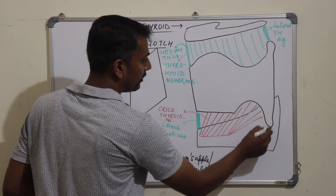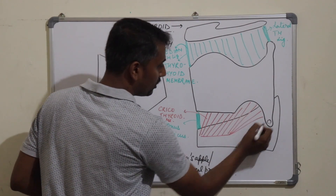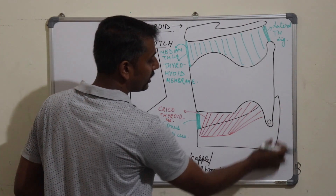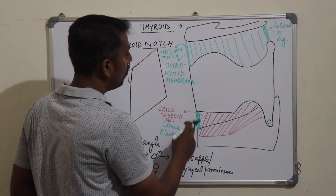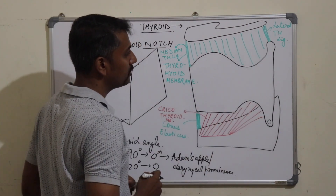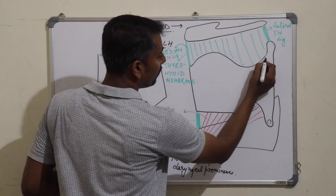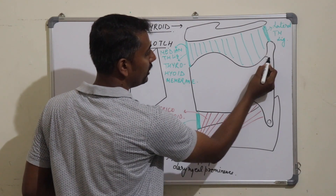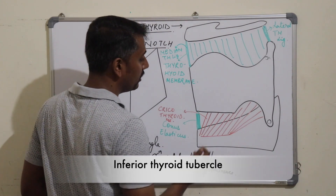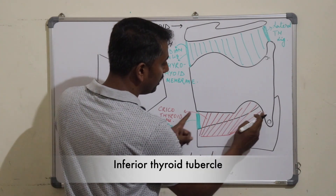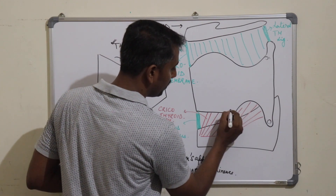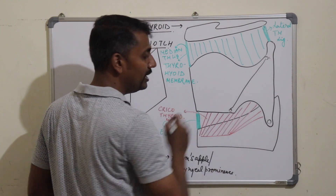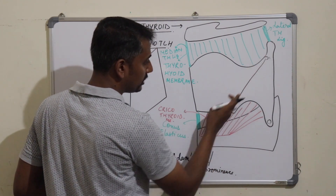The inferior horn of the thyroid cartilage forms a synovial joint with the cricoid cartilage at the junction of the arch and the lamina of the cricoid cartilage. On the outer surface of the thyroid lamina, two tubercles are present: the superior thyroid tubercle, just in front of the root of the superior cornu, and the inferior thyroid tubercle, just behind the middle of the inferior border. These two tubercles are joined by a line known as the oblique line, whose direction is downwards and forwards.